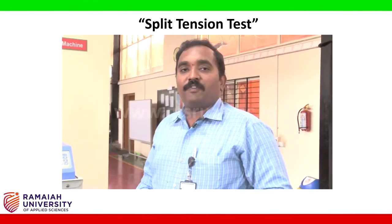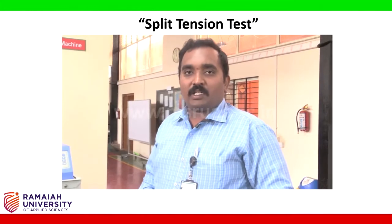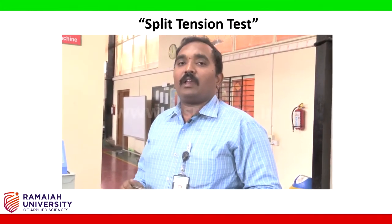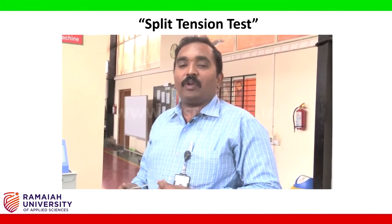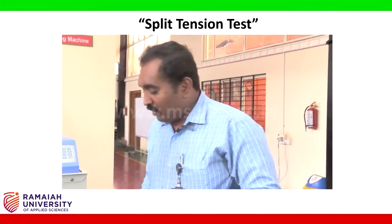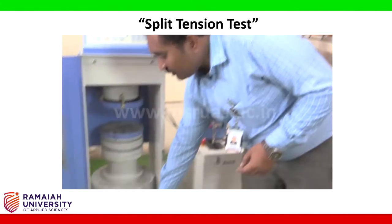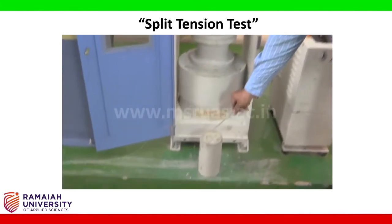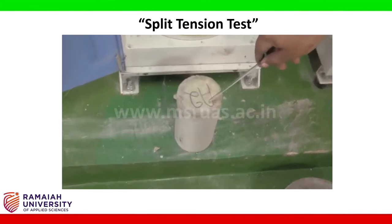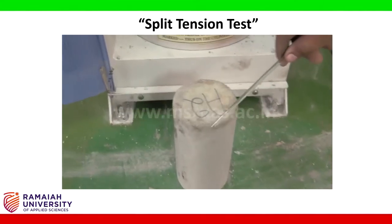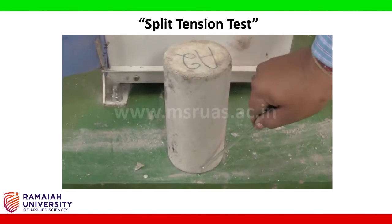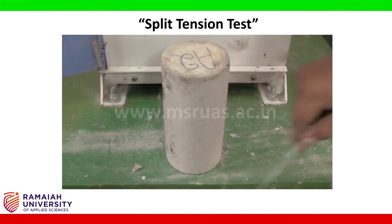After casting the specimen for split tensile strength, we unmold the sample and keep it in water curing for 28 days. After 28 days of curing, we get this cylindrical concrete specimen. The diameter and the length of the specimen are noted.